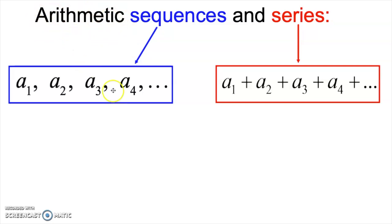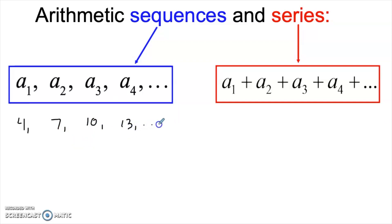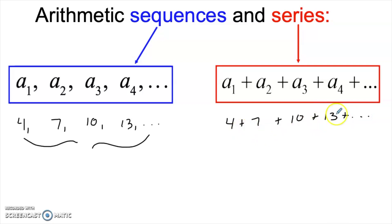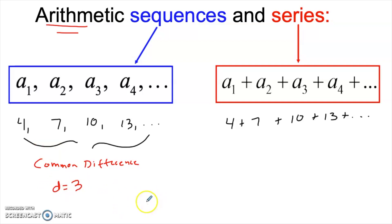What makes this an arithmetic sequence or series is that the way we get from one term to the next is by adding the same amount every time. For example, if I start with four and add three to get seven, then add three again to get ten, and so on — this is an arithmetic sequence. The four plus seven plus ten plus thirteen is an arithmetic series. What makes it arithmetic is that there's a common difference between all of the terms — in this case, that difference is three. We use the lowercase letter d to represent the common difference.